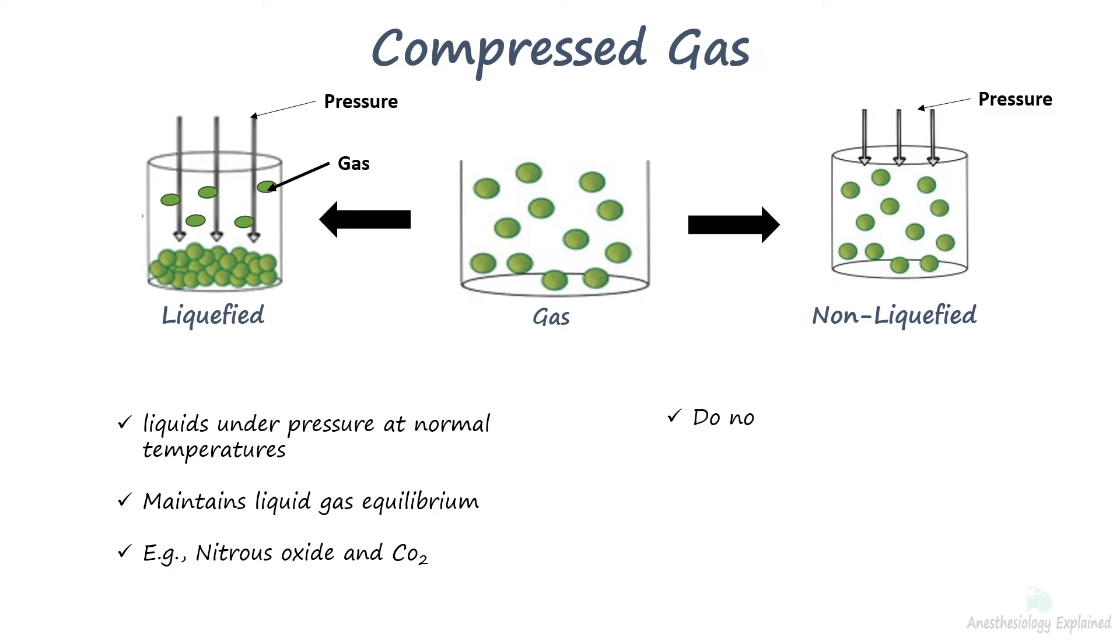Non-liquefied gases do not become liquid when they are compressed at normal temperatures, even at very high pressures. These gases can however be liquefied at lower temperature at which point it is called cryogenic liquids. Common examples are oxygen and nitrogen.